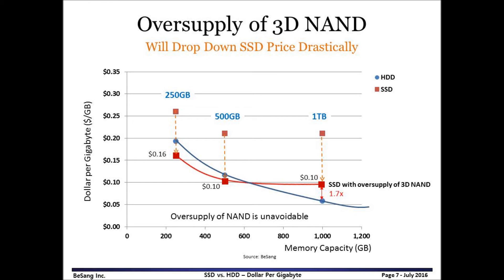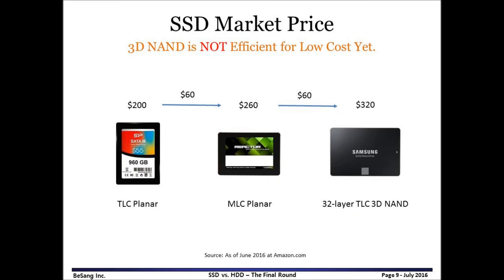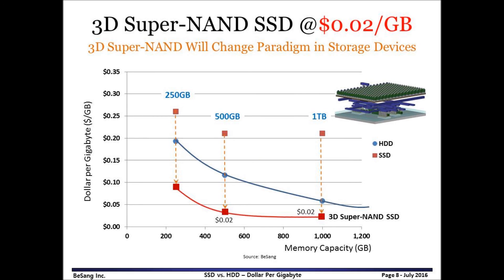If some NAND vendors give up price competition because of oversupply, then the price of NAND may bounce back, because 3D NAND would be difficult to sustain at low cost. For reference, TLC 32-layer 3D NAND SSD products from Samsung and Micron are about 25% to 50% more expensive compared to planar NAND SSD. Even though 3D NAND adds more memory cell layers in the vertical direction, it won't be easy to reduce cost efficiently. For the ultimate low cost solution, 3D Super NAND will change the paradigm in the storage market.